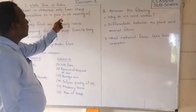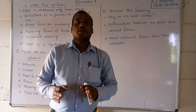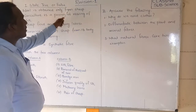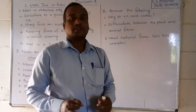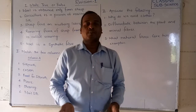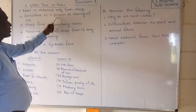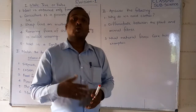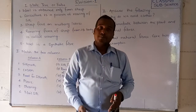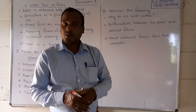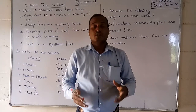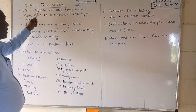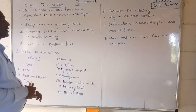First question: wool is obtained only from the sheep. Is that true or false? Read the question carefully. It is a false statement. Why? Because we are not getting wool from sheep only — we are also getting it from the goat, from the camel, and from other animals as well. So wool is obtained from different animals, and that is why this statement is false.